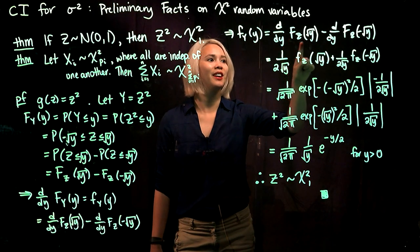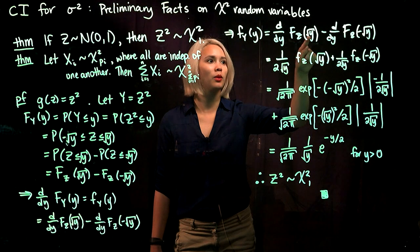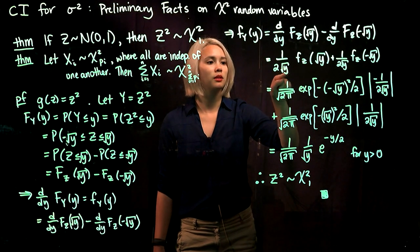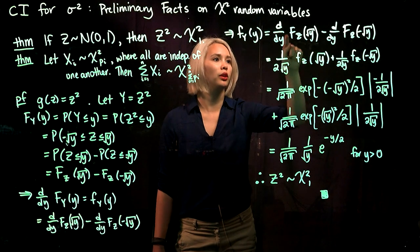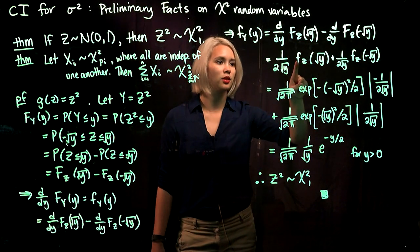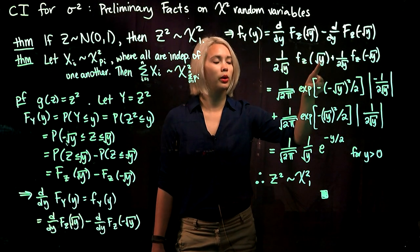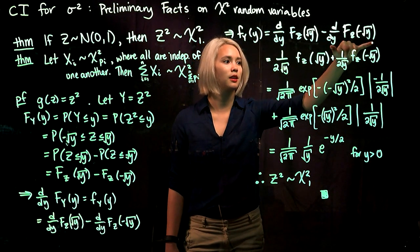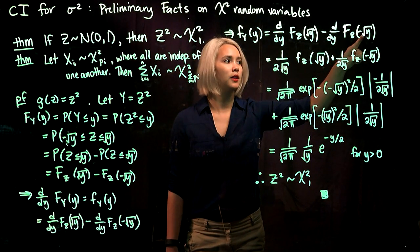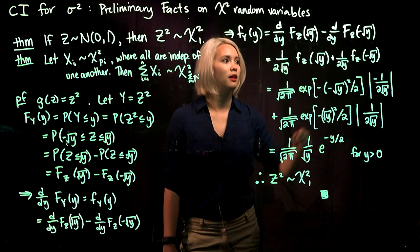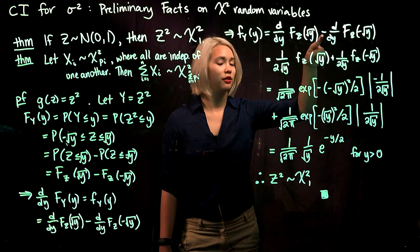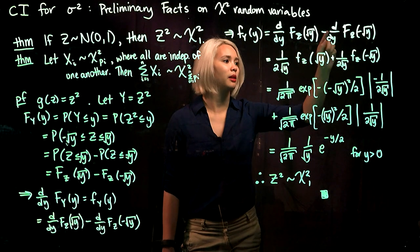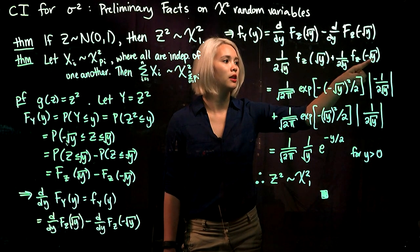Taking the derivative of the first piece, by the chain rule we take the derivative of square root of y, giving us 1 over (2 times square root of y), times the PDF for Z evaluated at square root of y. For the second piece, we take the derivative of negative square root of y — the two negatives cancel — giving us positive 1 over (2 times square root of y), times the PDF for Z evaluated at negative square root of y.